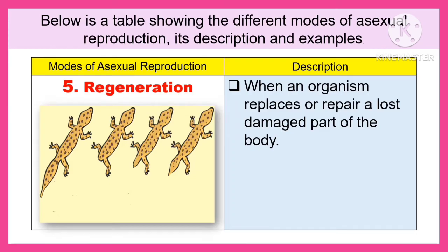The fifth mode of asexual reproduction is regeneration. It is when an organism replaces or repairs a lost or damaged part of the body.